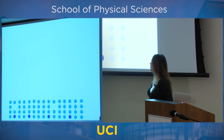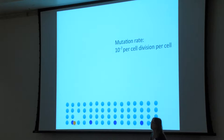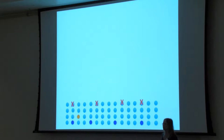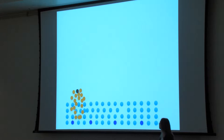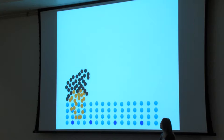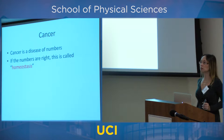At some point, a division can happen that involves a mutation. Mutations are rare — ten to the minus seven per cell per division — but because there are so many divisions, a mutation can happen. The mutated cell starts behaving differently: it divides out of turn, doesn't cooperate, and keeps going. It can create another mutation and keep going. You can see what this is — cancer. That's why I say cancer is a disease of numbers.